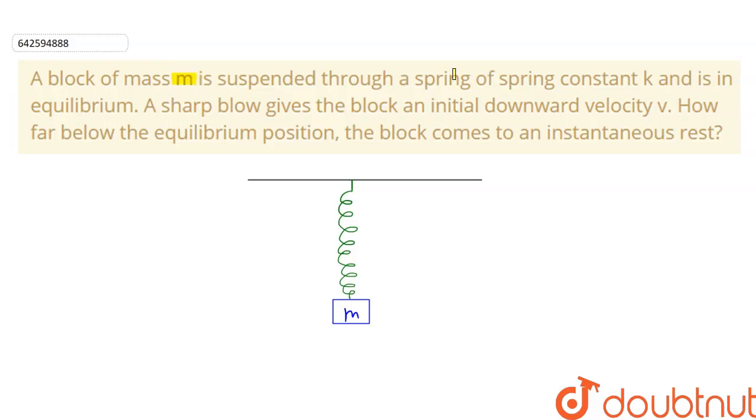A block of mass m is suspended through a spring of spring constant k and is in equilibrium. A sharp blow gives the block an initial downward velocity v. How far below the equilibrium position the block comes to an instantaneous rest?